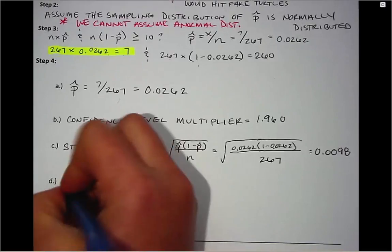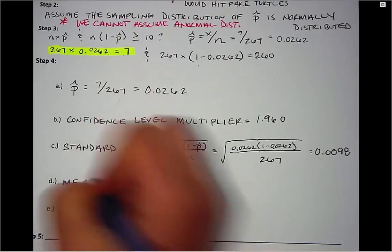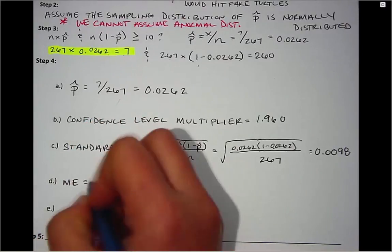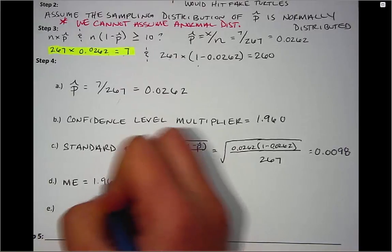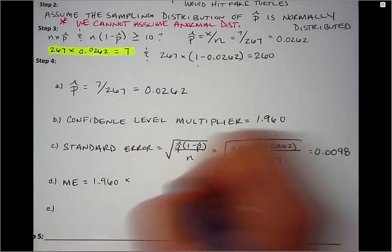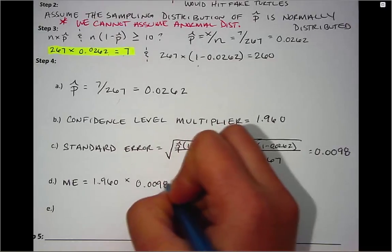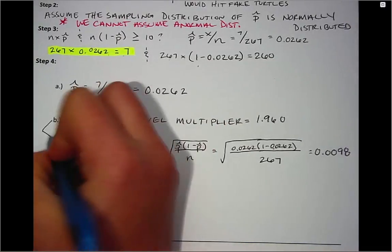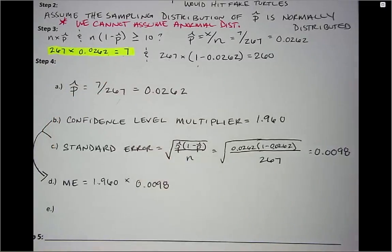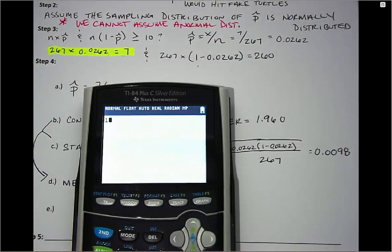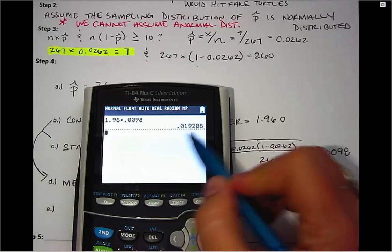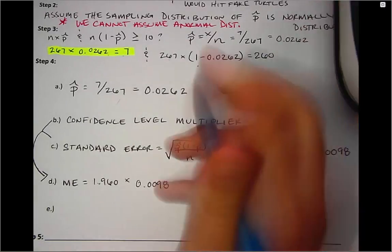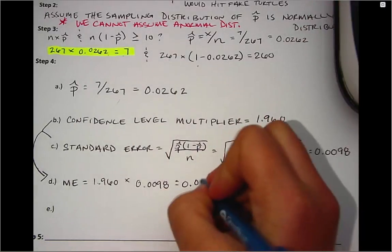Next we calculate the margin of error, frequently written as ME, which takes the multiplier times the standard error. Using our values from B and C, we have 1.96 times 0.0098, and we come up with a margin of error of 0.0192, going out to four decimal places.